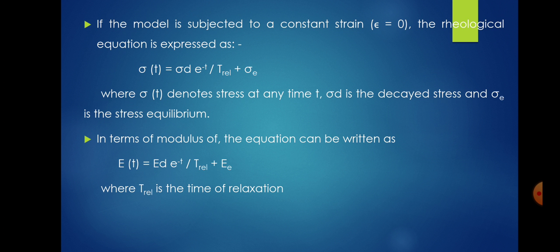If the model is subjected to a constant strain where epsilon is equal to zero, the rheological equation is expressed as: sigma(t) = sigma_d × e^(−t / t_relaxation) + sigma_e, where sigma(t) denotes stress at any time t, sigma_d is the decayed stress, and sigma_e is the equilibrium stress. In terms of modulus of elasticity, the equation can be written as: E(t) = E_d × e^(−t / t_relaxation) + E_e, where t_relaxation is the relaxation time.